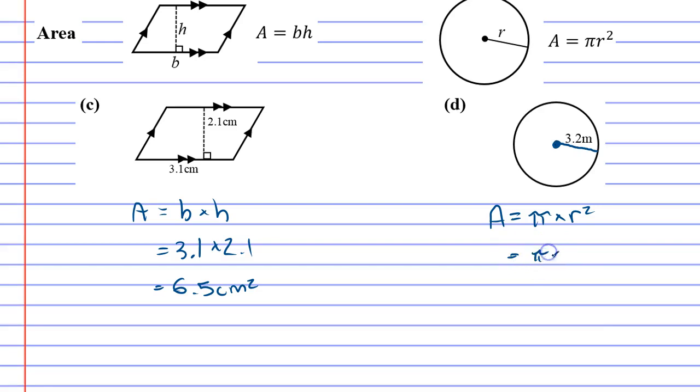So we're going to do π times 3.2 squared. Let's see what we get: π times 3.2 squared is 32.2—oh sorry, meters squared.